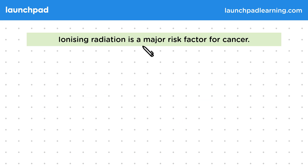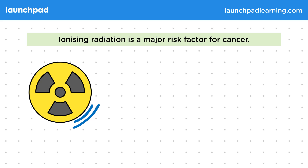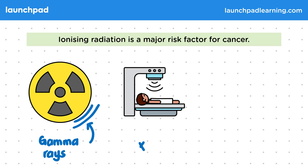Ionising radiation is a major risk factor for cancer. This is high energy radiation. An example of this would be gamma rays that come from radioactive substances like nuclear waste. X-ray machines give a very low dose of X-ray radiation, and the health risks are much lower than the risks of medical conditions if they're not diagnosed and treated correctly.